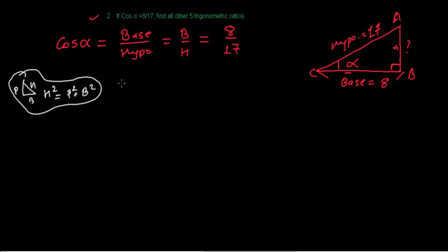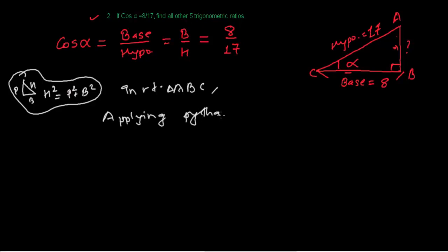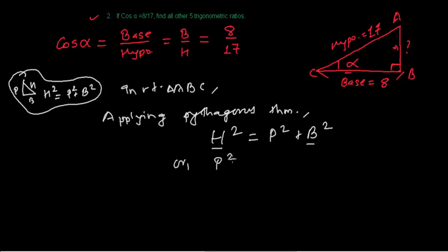In right triangle ABC, applying Pythagoras theorem we get: H squared equals P squared plus B squared. Here H and B are known but P is not, so rearranging: P squared equals H squared minus B squared.